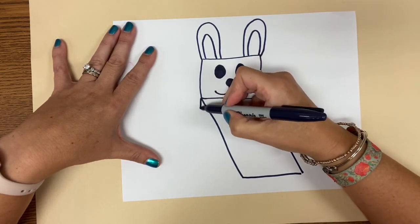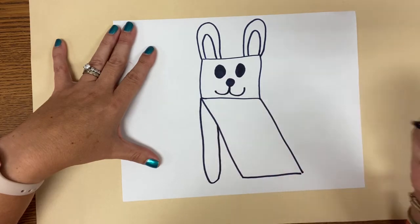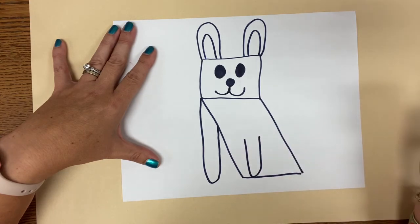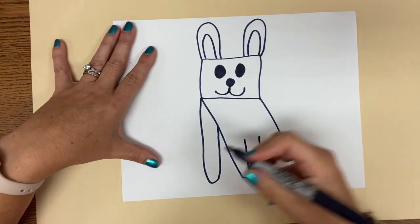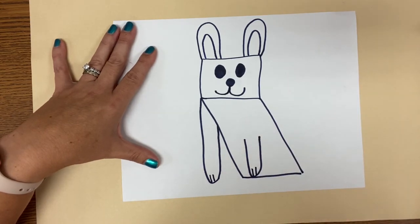And then we're going to do his front leg is a big skinny U shape and then another U shape for his other paw. And then we're going to put his little toes in there, two little lines for his toes.